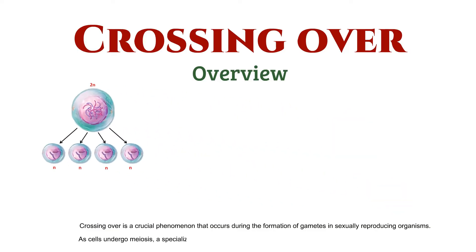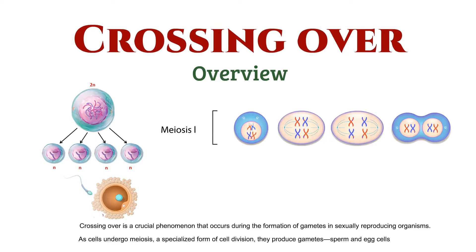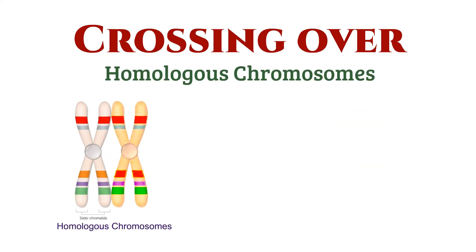As cells undergo meiosis, a specialized form of cell division, they produce gametes. Meiosis consists of two divisions: meiosis 1 and meiosis 2. At the heart of crossing over are homologous chromosomes.